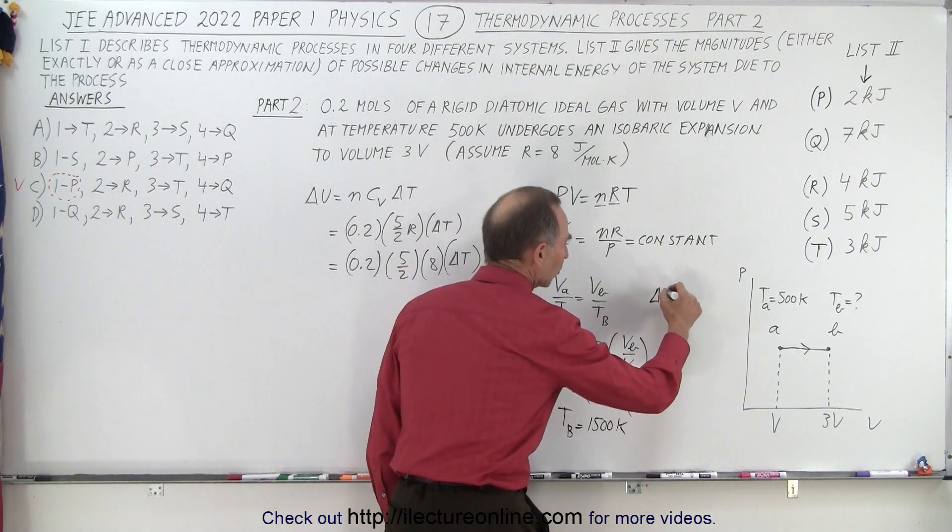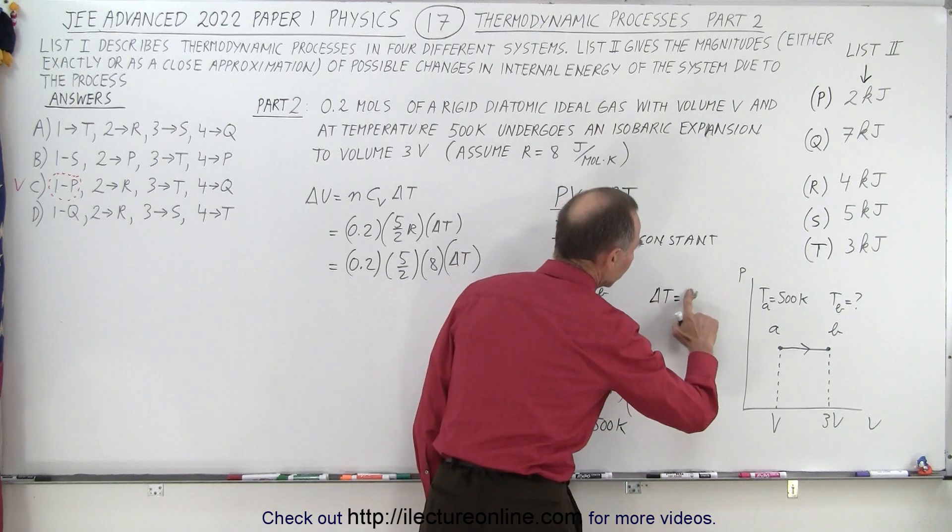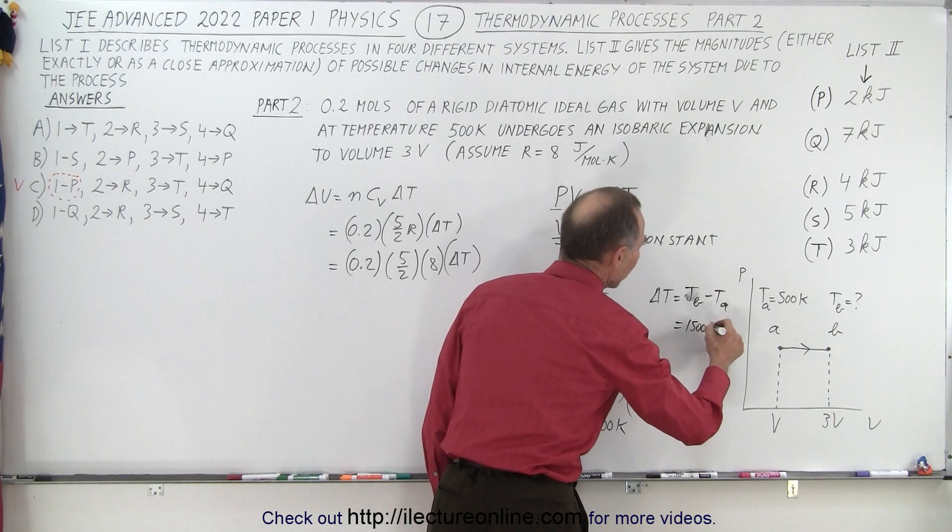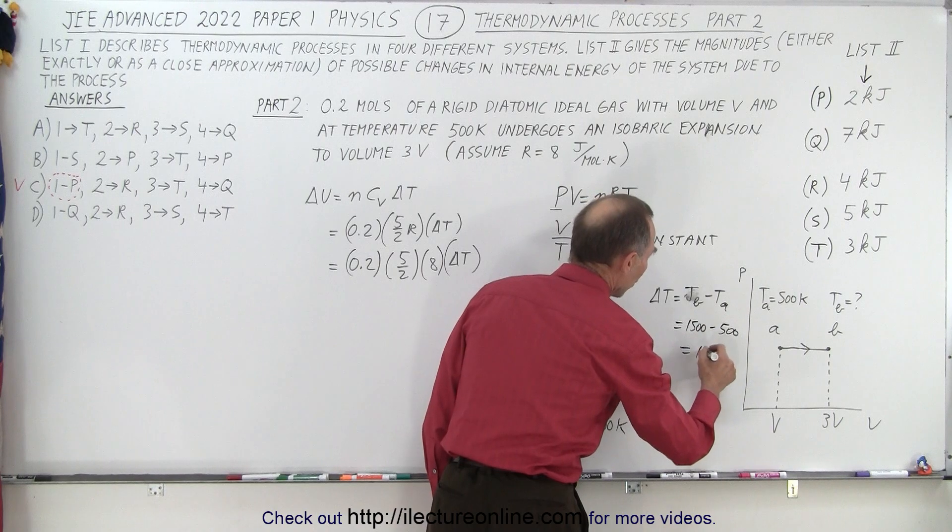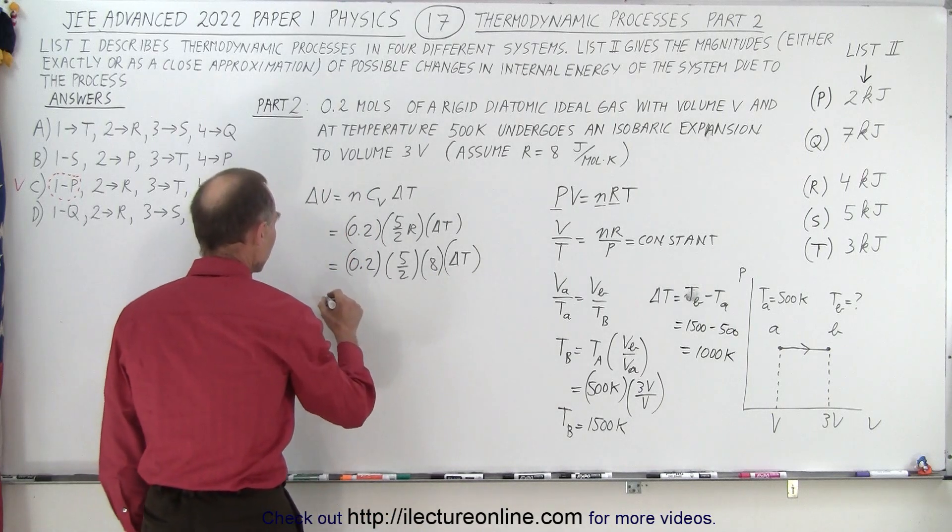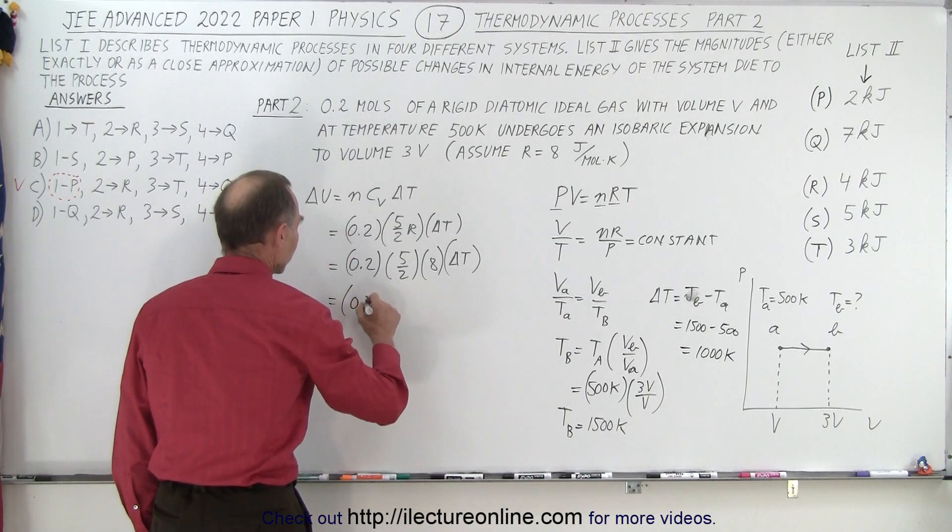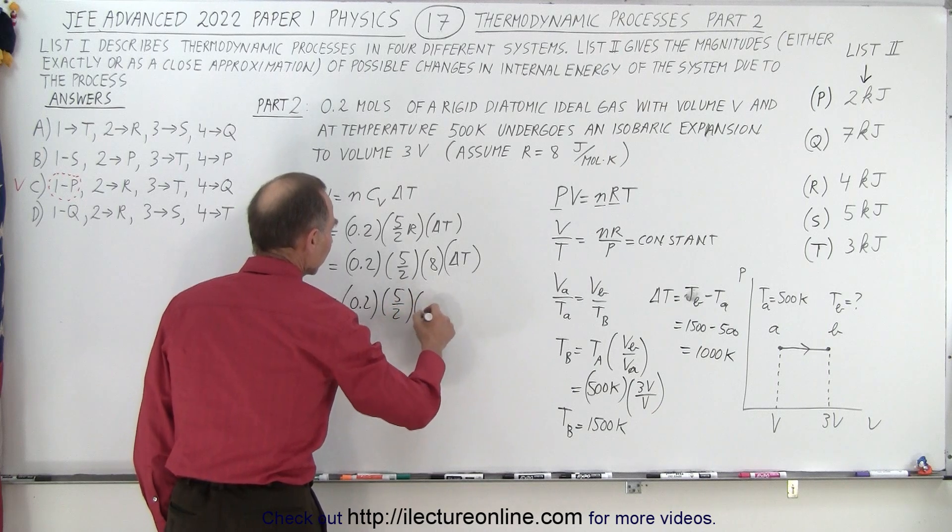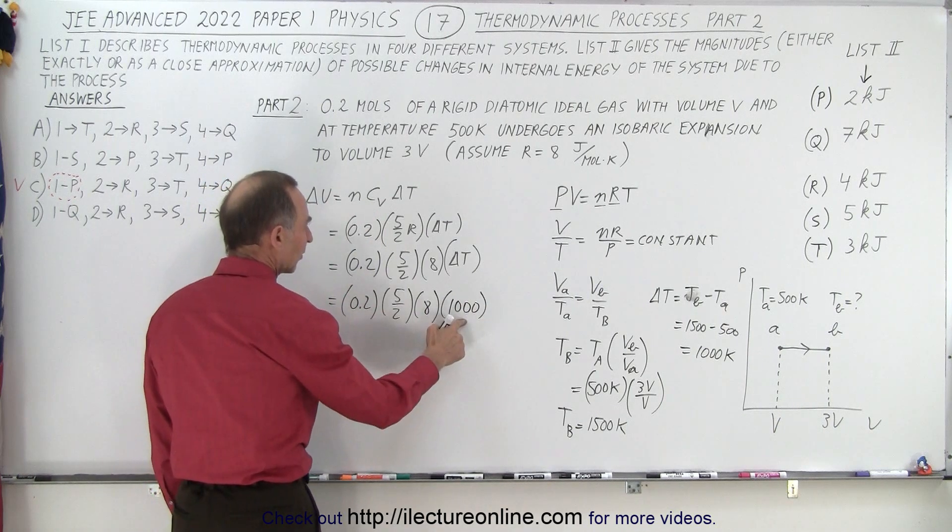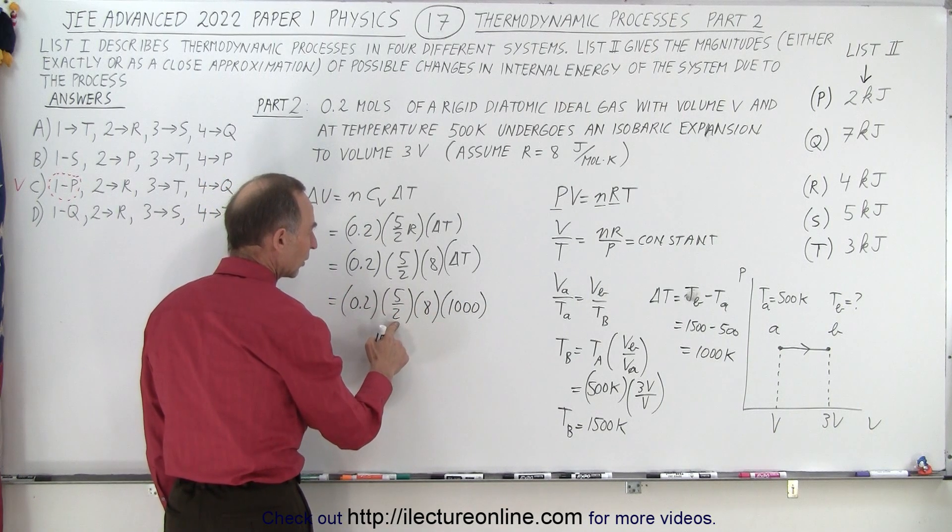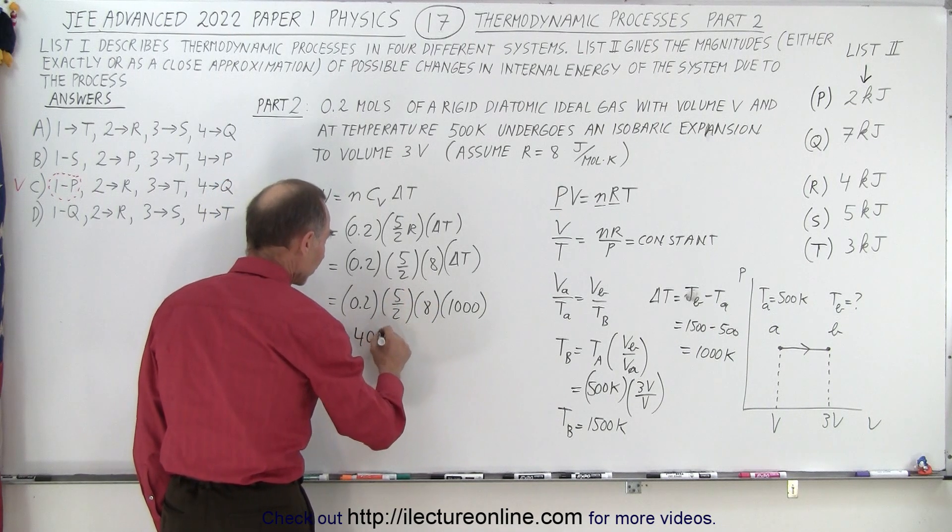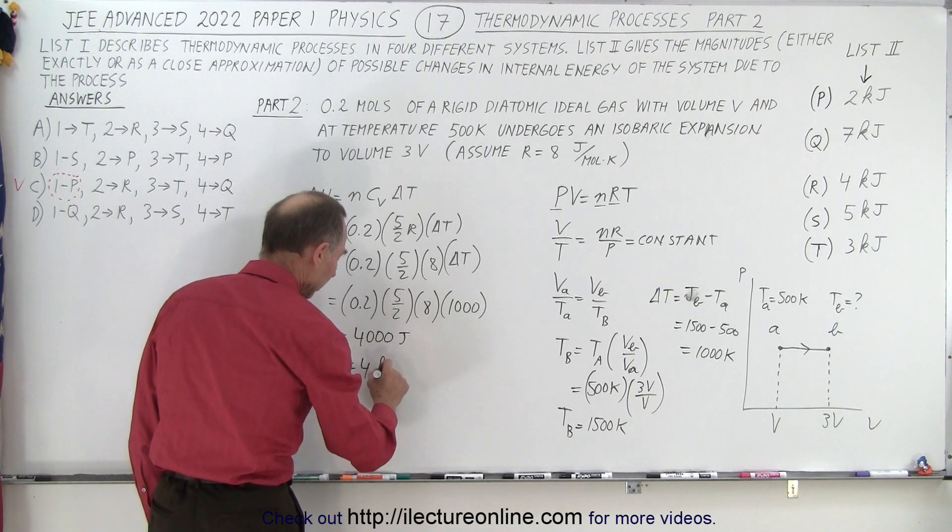That means that the change in the temperature, temperature at B minus temperature at A, which is equal to 1500 minus 500 or 1000 Kelvin is the difference in the temperature. And that is what goes in here, that means that the change in internal energy is 0.2 times 5 over 2 times 8 times 1000. So 0.2 times 1000 is 200 divided by 2 is 100 times 5 is 500 times 8 is 4000. So this is 4000 joules, which means 4 kilojoules.